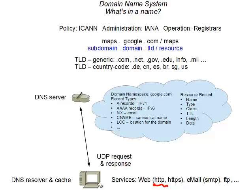The next slide will show how we find that server. The request is forwarded and it may specify a record type. There are a couple of dozen record types maintained within the domain name system. The query is directed to a namespace — in this case google.com — with the subdomain being maps. The return responses are called resource records, and they are always organized into six categories. This is the schema for a resource record.